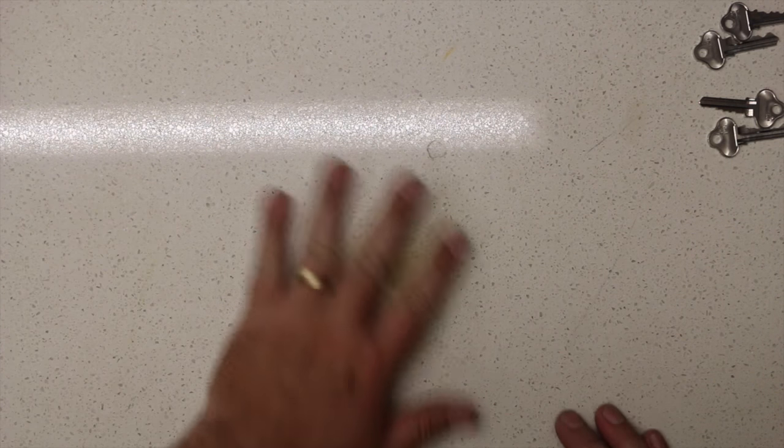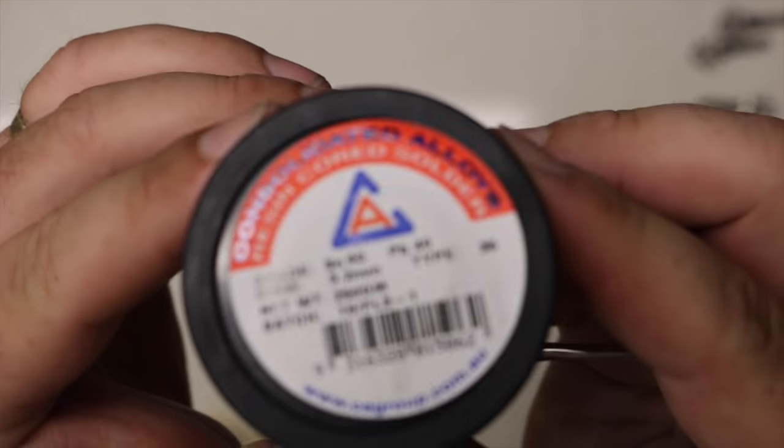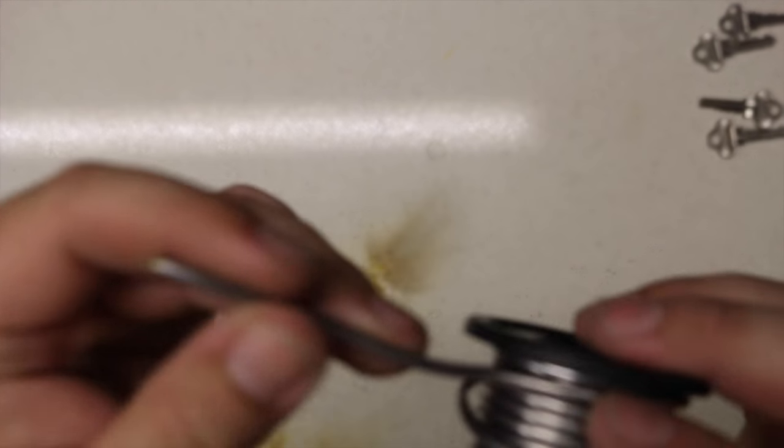The solder I'm going to be using today is a resin cord solder. This one is 3.2 millimeters in diameter and I found that the thicker the solder, the easier it seems to work.